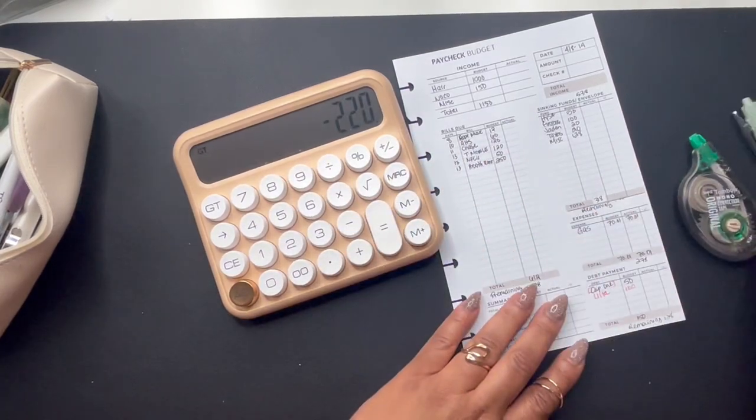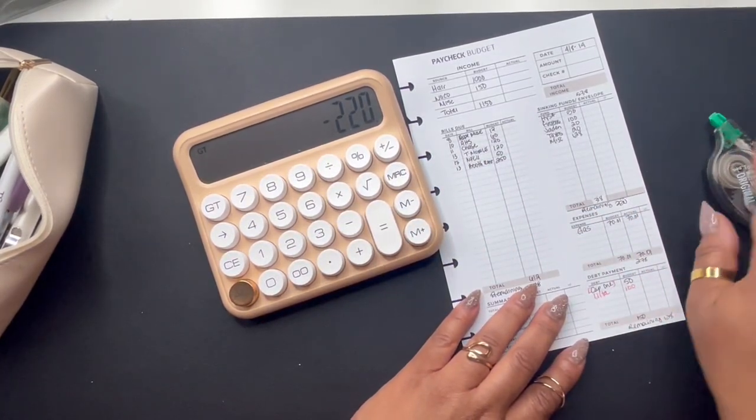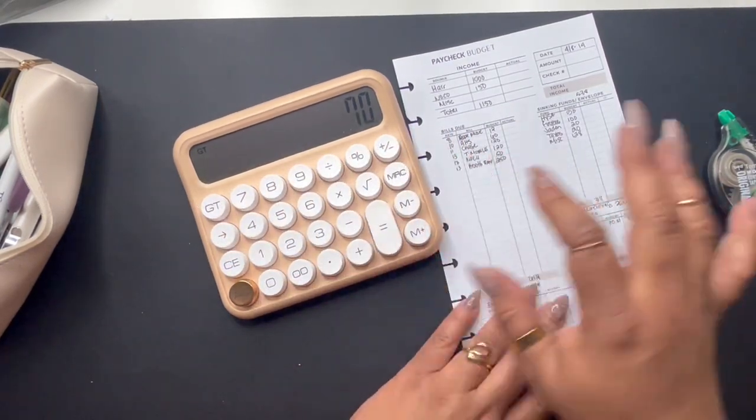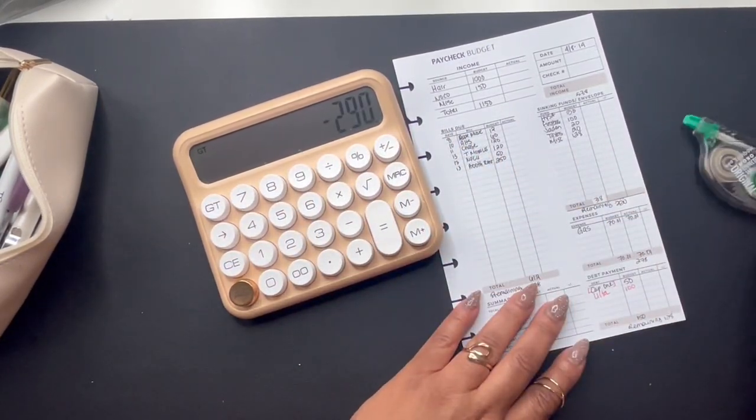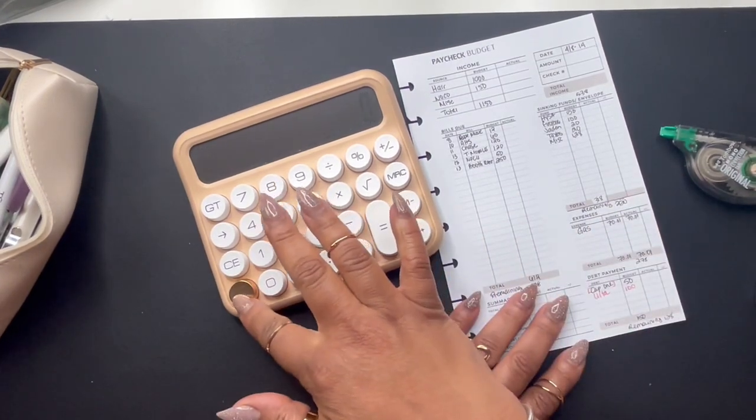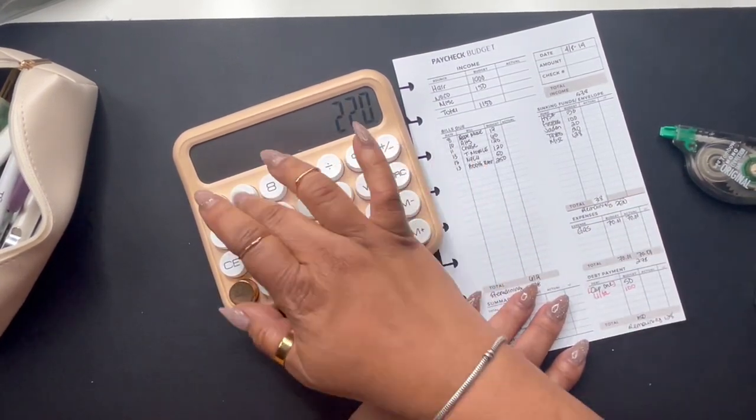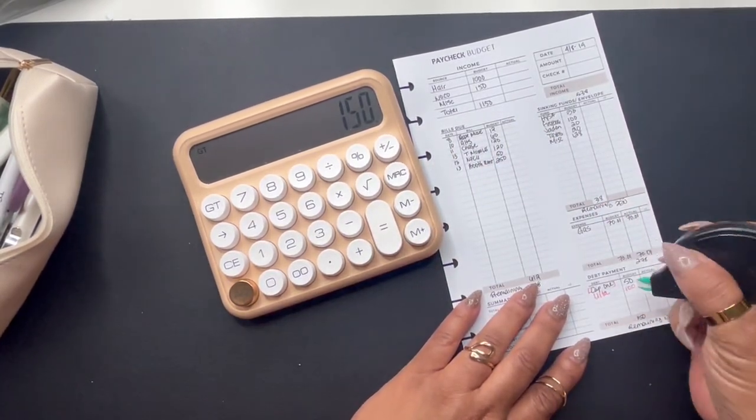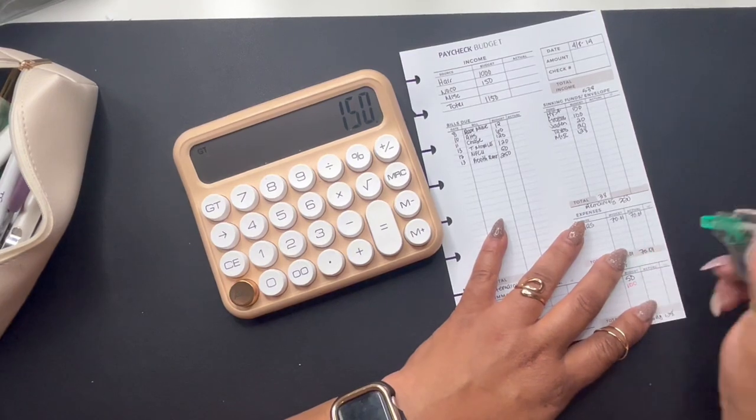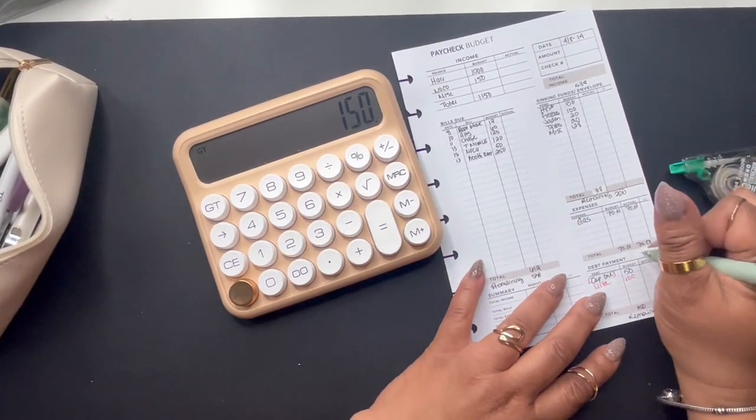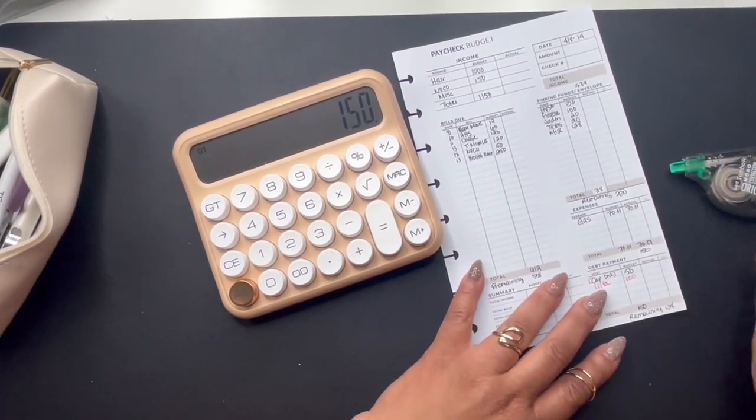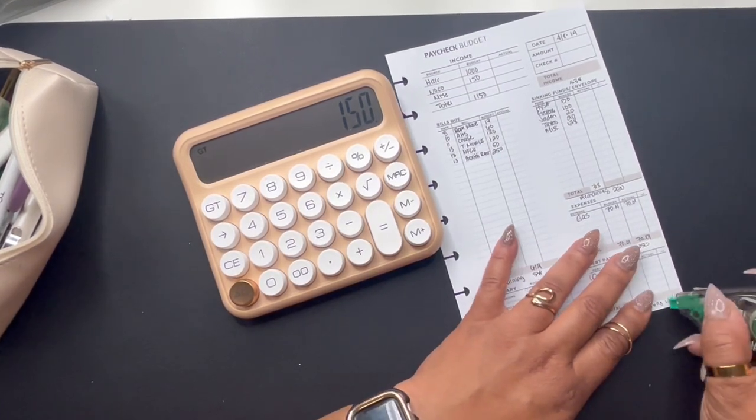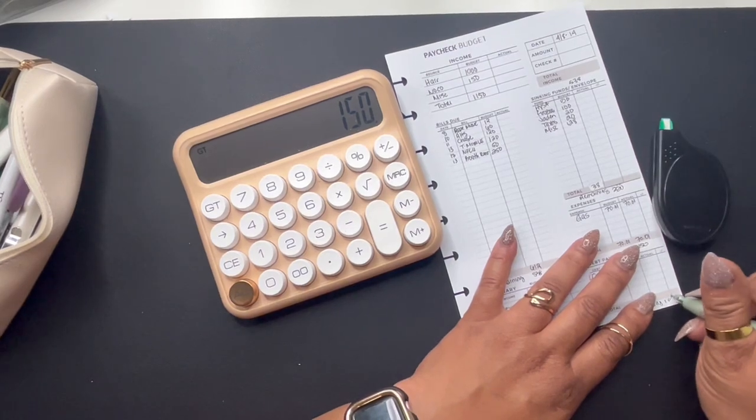$318 from $538 leaves us $220. Subtract $70, it's $290. Wait a minute, $220 subtract $70, it's $150.